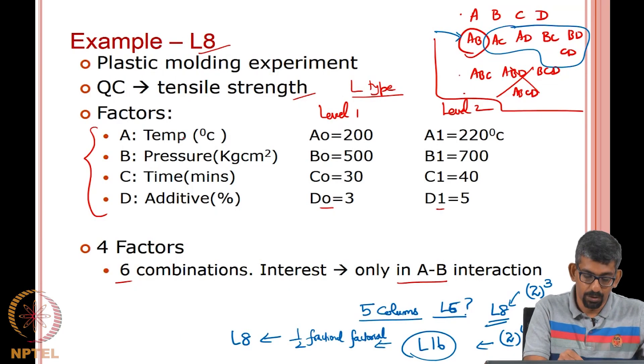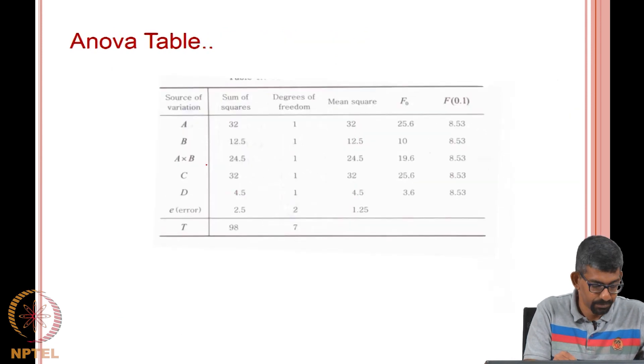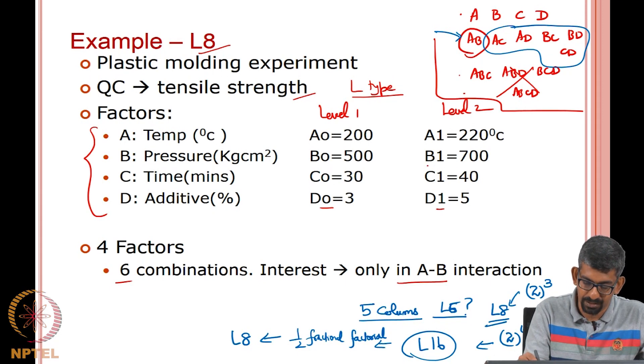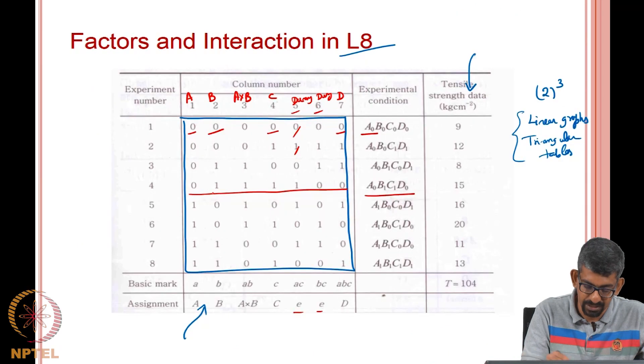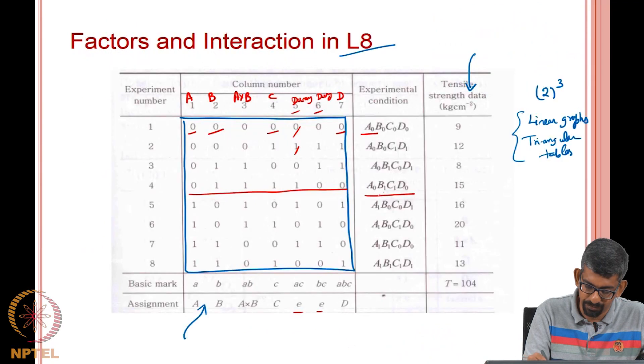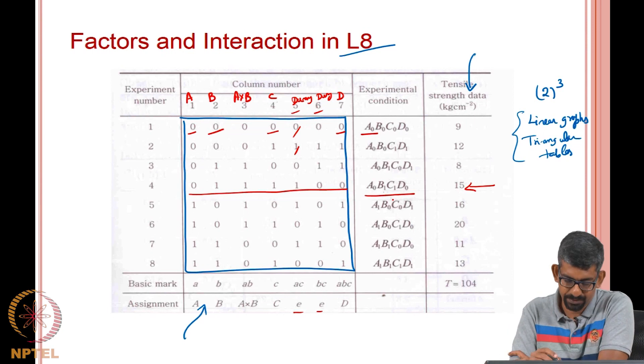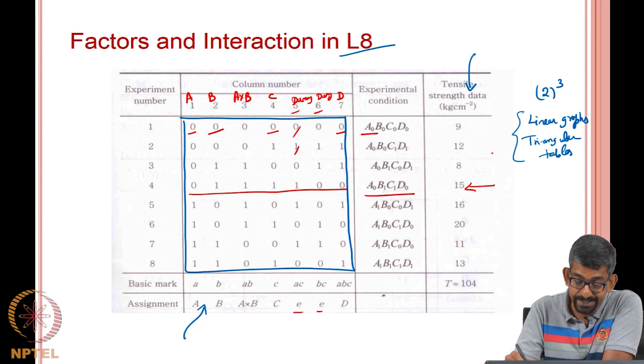What was A? Temperature 200 degree, 220 degree. So, 0 means what, temperature of 200 degree I am fixing it. B is the pressure, B1 factor the second level, B1 is 700. So, I am fixing it at 220 degree centigrade, 700 kilogram centimeter squared for the pressure, then C is C1, so the time is 40 minutes and D is D naught which is 3 percent additive. I am doing and I am getting a response of 15 units kilogram per centimeter squared in terms of the tensile strength. Similarly, each one of the row is a different experiment. For each experiment I am getting different results.